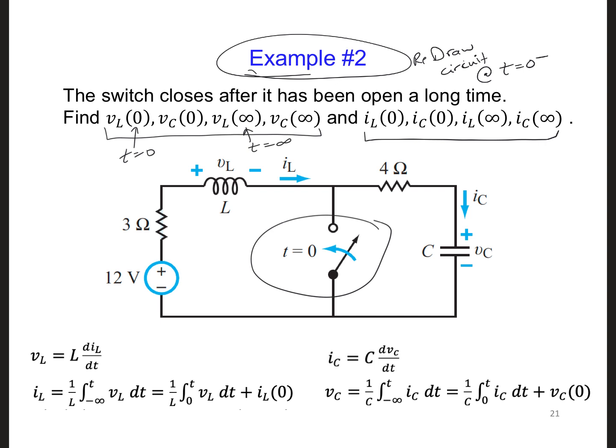So then also draw it for T equals 0, right when the switch is closed, right at that moment. And also draw it a third time, redraw the circuit a third time, at T equal infinity, so after a long period of time has elapsed. And that will help you to obtain these values that we're looking for.